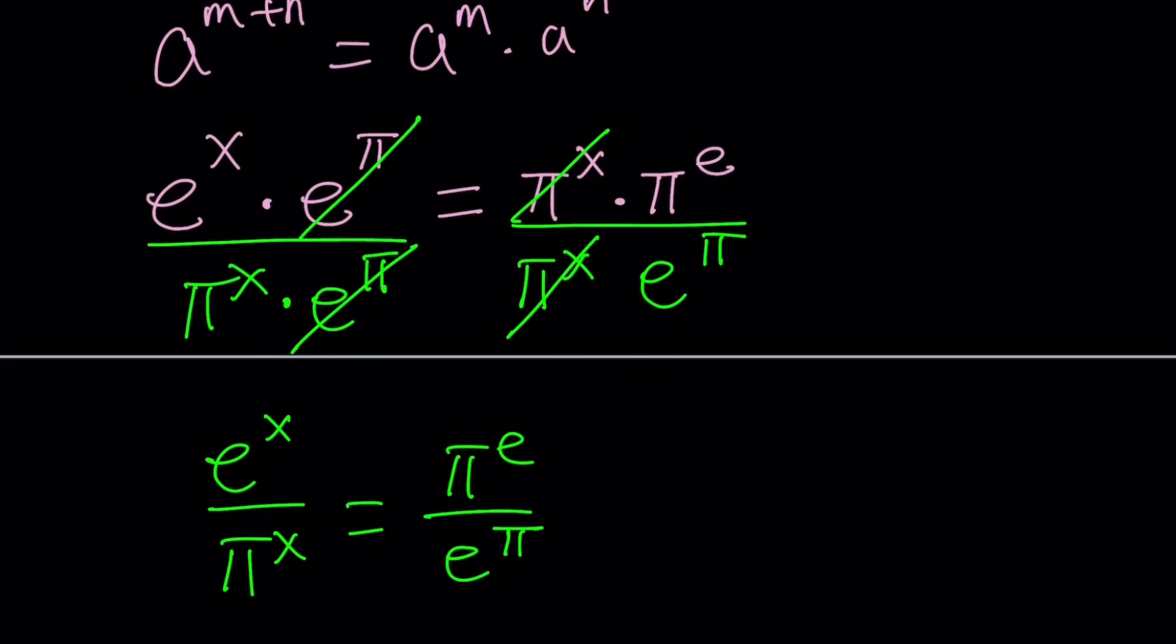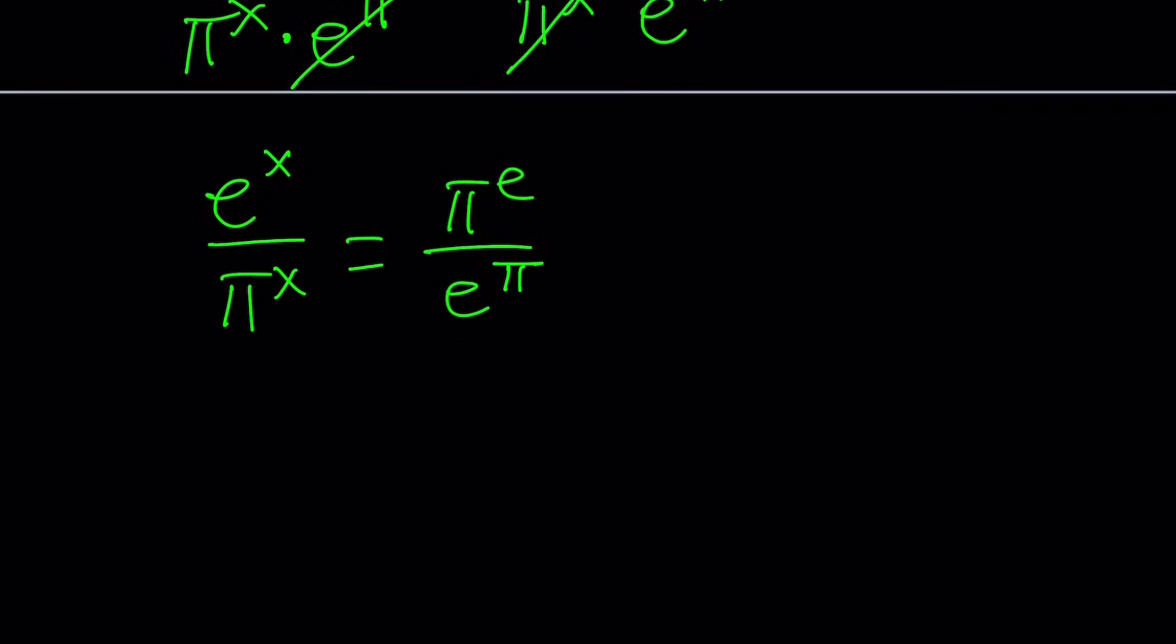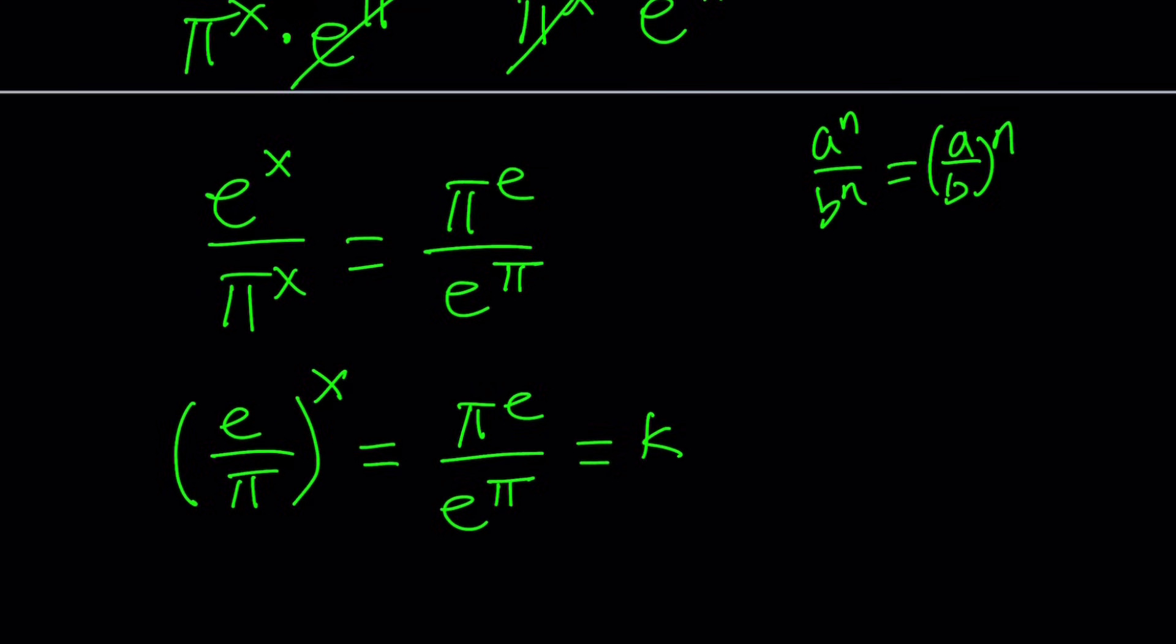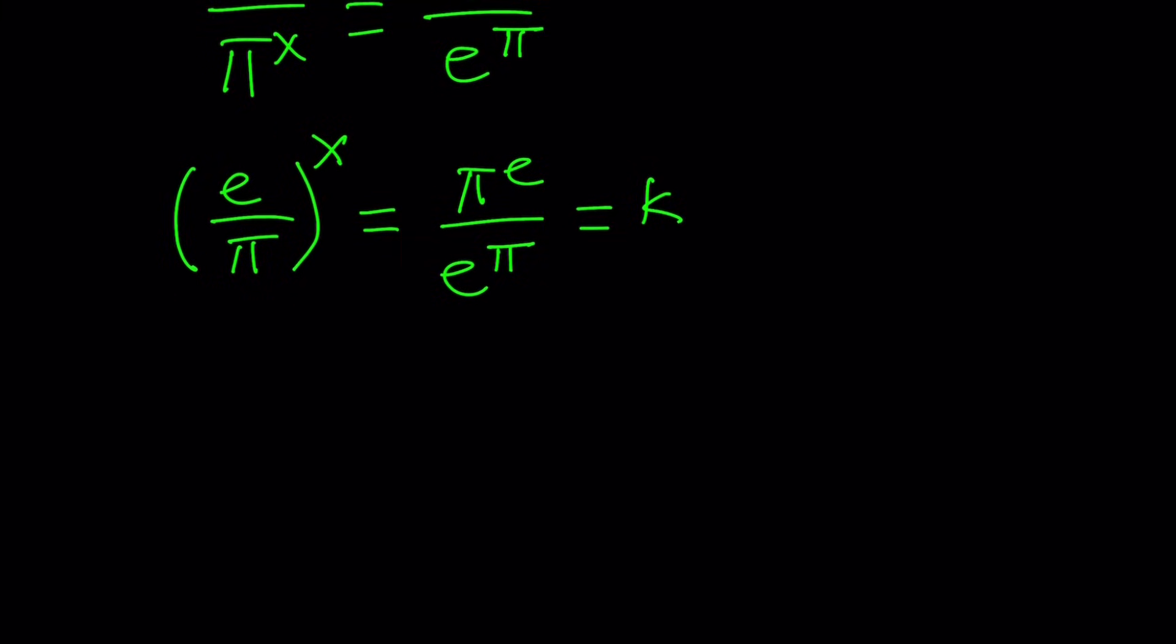What do we have on the left-hand side? Same exponent. If you have a to the n, b to the n, same exponent, you can write it as a single exponent and just divide the bases. So we're going to divide the bases, e over pi, and then just raise it to the power of x. If you don't like this, you can call it k, k is a constant. And then at the end you're going to back substitute. We have this simple equation, e over pi to the power of x equals k.